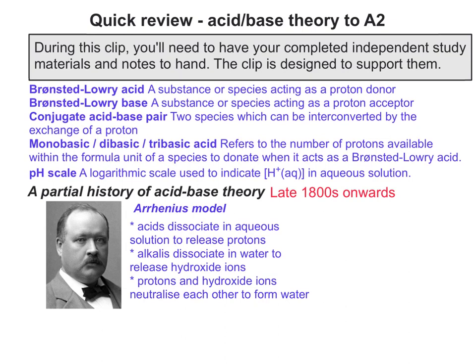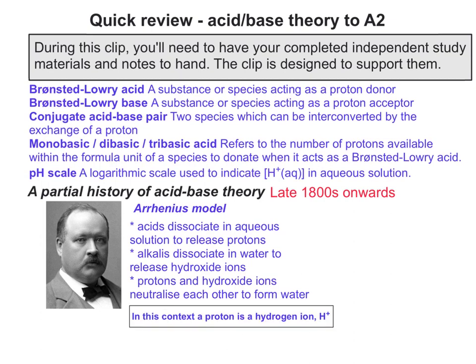The Arrhenius model was based around three basic ideas: acids dissociate in aqueous solution to release protons; alkalis dissociate in water to release hydroxide ions; and protons and hydroxide ions neutralise each other to form water. In this context, a proton is a hydrogen ion, or H+.